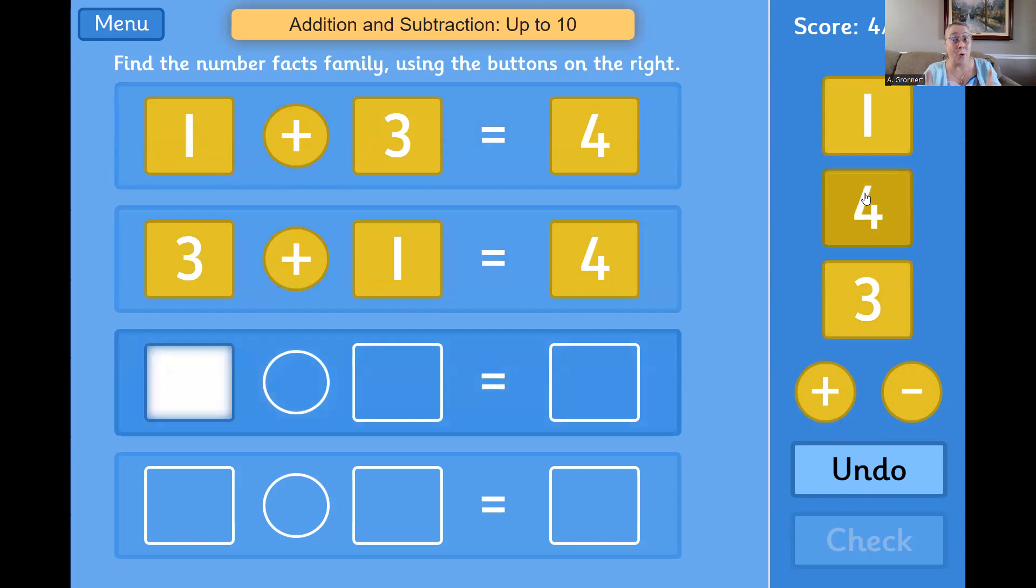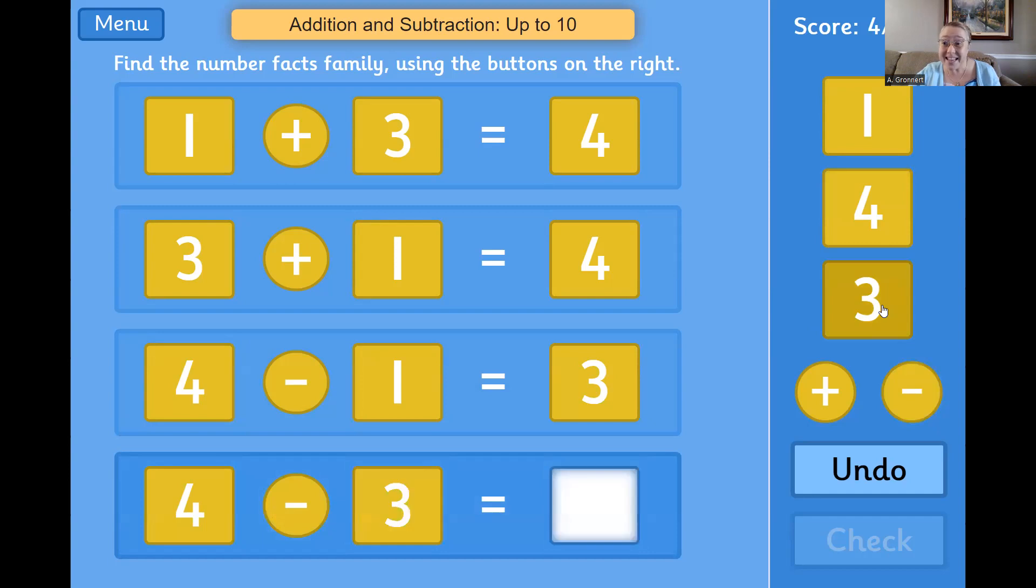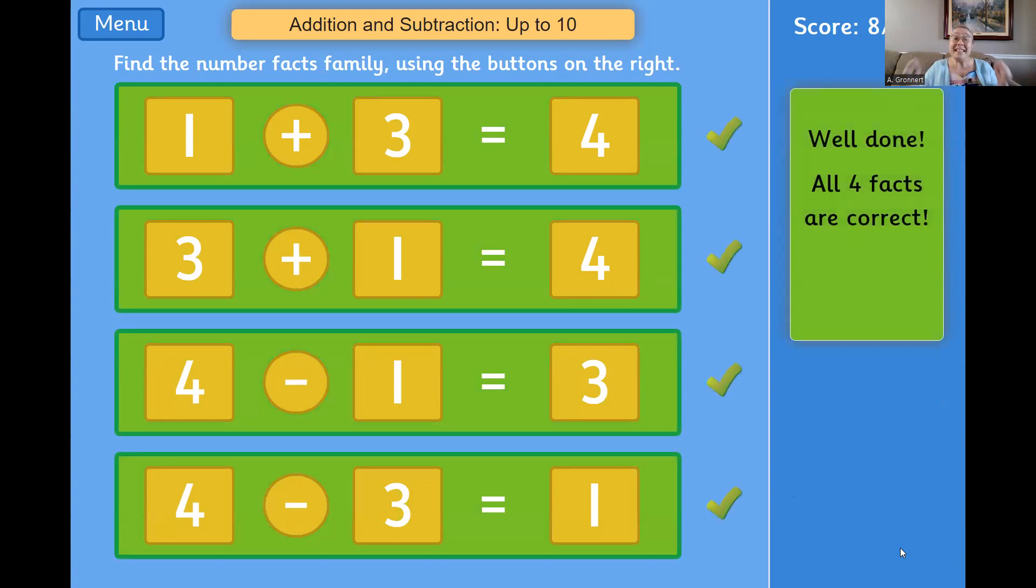Now we start with the whole. And the whole is 4. So let's do that. 4 take away 1 equals 3. And 4 take away 3. That's right. Equals 1. Okay, let's check those. We did it! We got all of them correct.